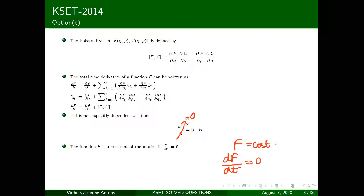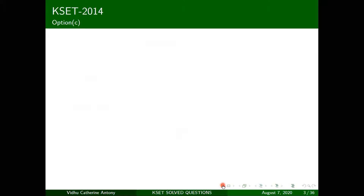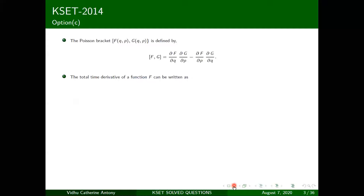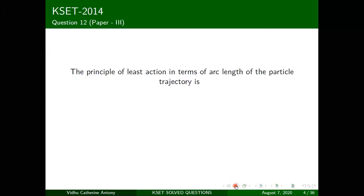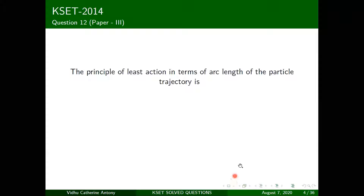Setting df/dt = 0 and ∂f/∂t = 0, we get {f, H} = 0. So the Poisson bracket of any constant of motion with the Hamiltonian H is zero. That is the answer to this question.